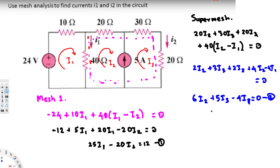To find the third equation, we look at the node along the current source. The 5 ampere source and i2 are both entering this node, while i3 is leaving. Applying Kirchhoff's Current Law — whatever current enters must exit — we get: 5 + i2 = i3. This is our third equation.